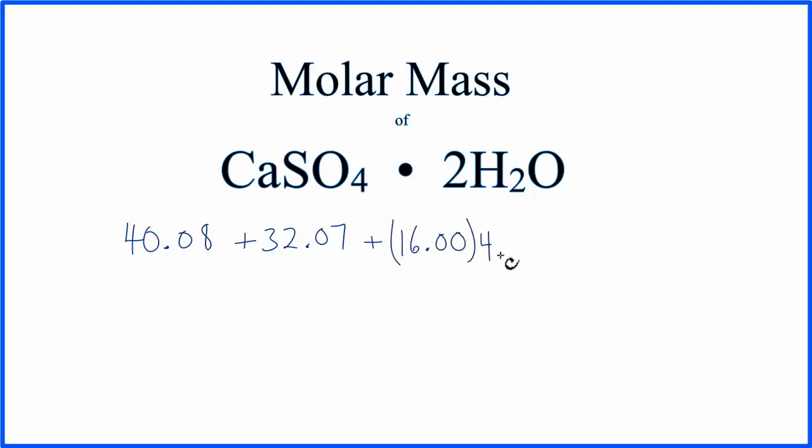so we multiply this by four. Then we have this dot 2H2O, and what that means is we have two H2O molecules. So let's put plus two times hydrogen, which is 1.01 grams per mole, we have two hydrogens, plus that oxygen, 16.00 grams per mole.